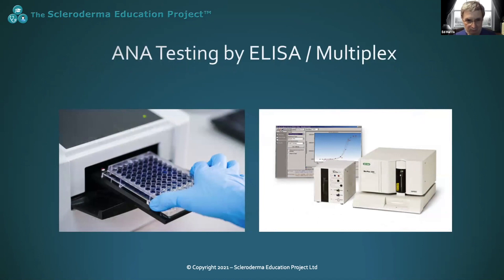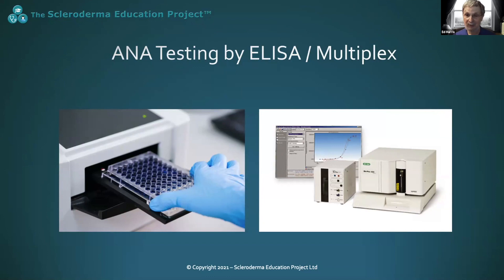In recent years, the standard method of doing ANA testing has started to change. Three alternative methods are now commonplace: solid phase immunoassays (ELISA or EIA), line immunoassays (LIA), and a related technique known as multiplex bead array. These new methods are faster, cheaper, and generally very accurate. Unfortunately, they also introduce significant major problems, especially for patients with systemic sclerosis.